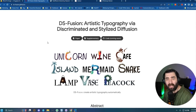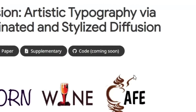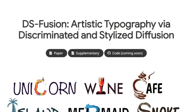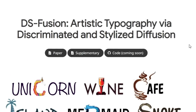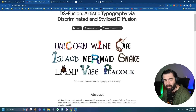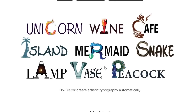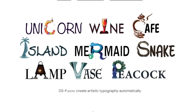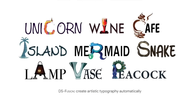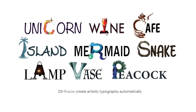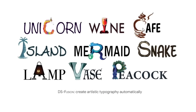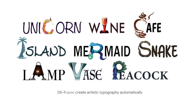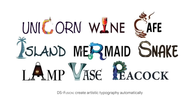Here's another one that's not quite ready yet — we can't play with it ourselves. It says the code is coming soon, which means the demo on something like Hugging Face is also coming soon. This one's called DS-Fusion: Artistic Typography via Discriminated and Stylized Diffusion. It's a similar concept, but it actually adds color and a little bit more artistic design to it. It looks like it works the same way where you give it a word, a context, and then pick a letter to change. Here are some examples: the C turned into a unicorn, the I from wine into a wine glass, the C from cafe into a coffee cup, the I from island into a palm tree, the R from mermaid into a mermaid itself — snake, lamp, vase, peacock. You get the idea.